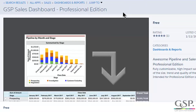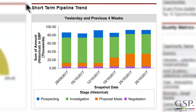The only difference between the two dashboards relates to this chart here — it's this chart in the middle of the screen, the short-term pipeline trend. The underlying report for that chart uses a feature called historical trending, and historical trending is only available in Enterprise Edition and above within Salesforce, hence the need for two slightly different versions of the dashboard.